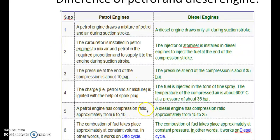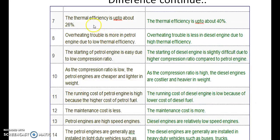A petrol engine has a compression ratio of approximately 6 to 10, while a diesel engine has a compression ratio of 15 to 25. Combustion in a petrol engine takes place at approximately constant volume; in a diesel engine it takes place at approximately constant pressure. The thermal efficiency of a petrol engine is about 36%, while that of a diesel engine is about 40%. Overheating trouble is more in petrol engines and less in diesel engines. Starting a petrol engine is easy, while starting a diesel engine is slightly difficult.